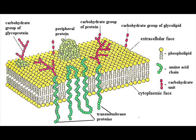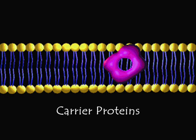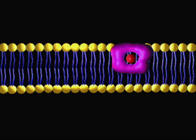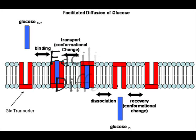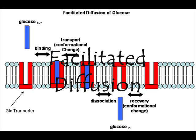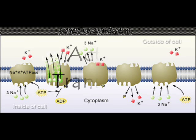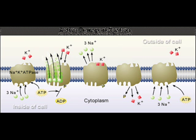Other proteins are embedded in the phospholipid bilayer itself. These are often associated with transporting molecules from one side of the membrane to the other and are referred to as carrier proteins. Some of these form channels or pores through which certain substances can pass — this is called facilitated diffusion. Others bind to a substance on one side of the membrane and carry it to the other side — that is called active transport.